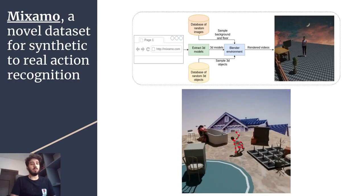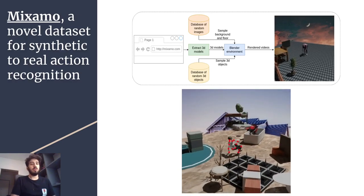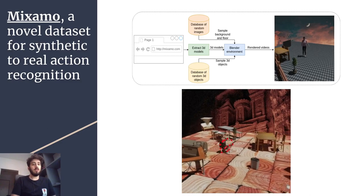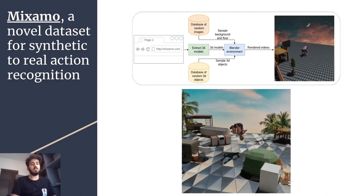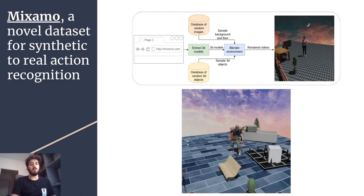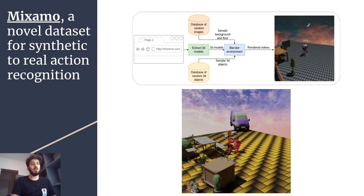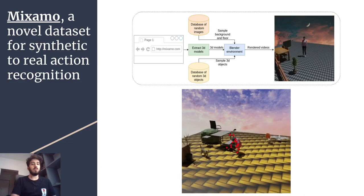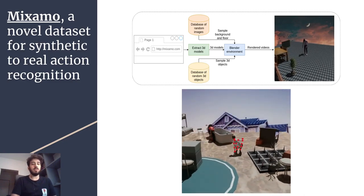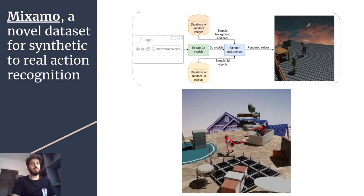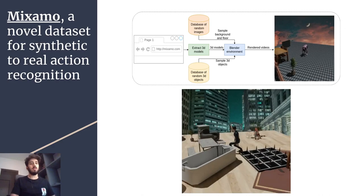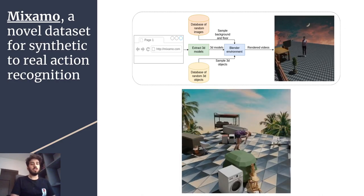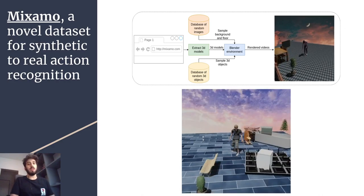Here we present Mixamo, our novel synthetic to real unsupervised domain adaptation dataset for video action recognition. We tried to address the lack of datasets in this research direction, so we made Mixamo both large scale and with a high domain shift. The dataset contains synthetic 3D humans performing different actions in different scenarios. Also apart from the frames, we provide key points for the humans, and on the right you can see some examples of our dataset. Scenarios are randomly generated, so we can create more data as needed.